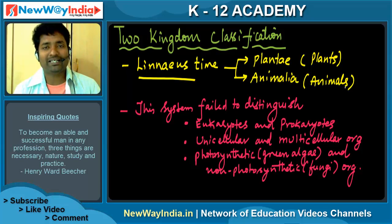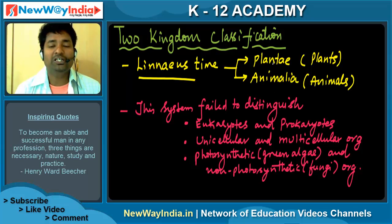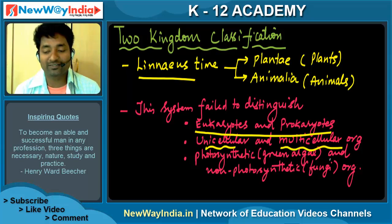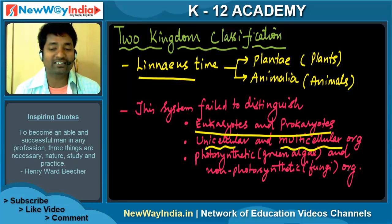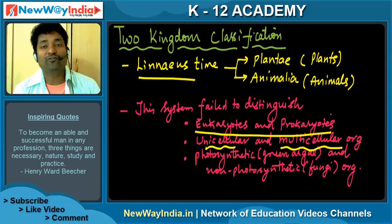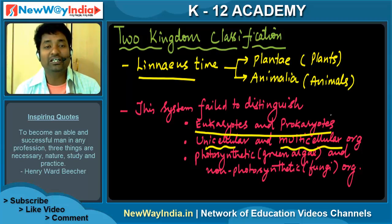It included bacteria and all other organisms into only two categories — two kingdoms. But this system failed to distinguish eukaryotes and prokaryotes, unicellular and multicellular organisms, and photosynthetic green algae from non-photosynthetic fungi. These organisms were not differentiated in two kingdoms.